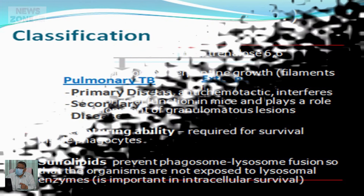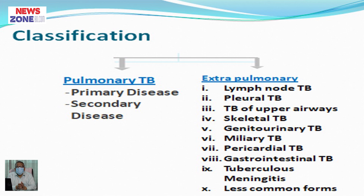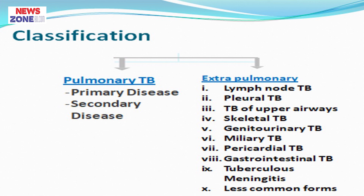Tuberculosis can be classified as pulmonary tuberculosis — which may be primary or secondary — and extrapulmonary tuberculosis, which can affect almost all parts of the body. The tissues not affected include thyroid, skeletal muscle cells, cardiac muscle cells, and the brain. All other tissues and organs of the human body can be affected by Mycobacterium tuberculosis.